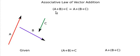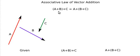It says: if I add vector a and b and then add the resultant to vector c, that will be the same as if I add vector b and c first and then add the resultant to vector a.